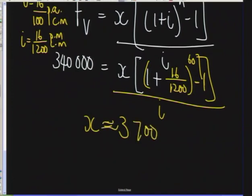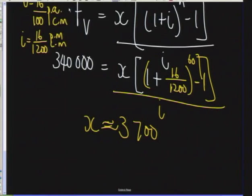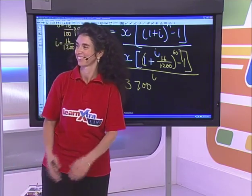The monthly payment works out to approximately R3,735. So if every month you put away about R3,700, in five years you'll have enough money for that new machine. Time for a break! Grade 12s, please post your questions on our page at facebook.com/learnextra — I can see a whole bunch of you helping each other out. That's exactly what we want.